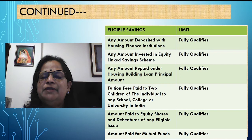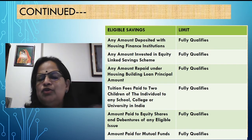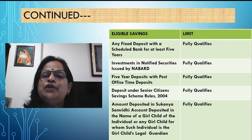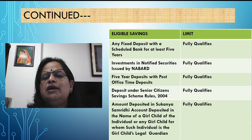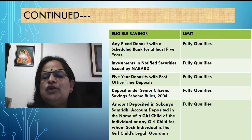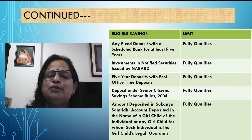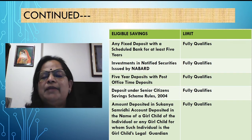Any amount paid for equity shares and debentures of any eligible issue fully qualifies. Amount paid to mutual fund also fully qualifies. Any fixed deposit with a scheduled bank for at least 5 years — the lock-in period should be 5 years — fully qualifies. Investment in notified securities issued by NABARD (National Bank for Agriculture and Rural Development) fully qualifies. 5-year deposits with post office time deposits fully qualify — post office deposits are becoming very popular now.